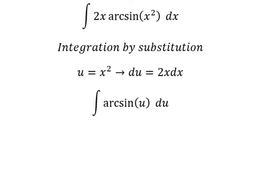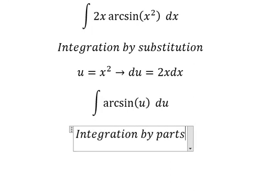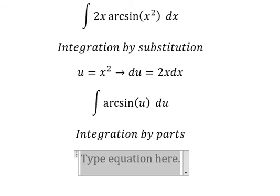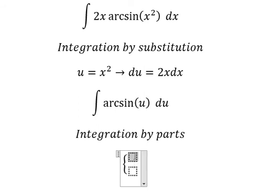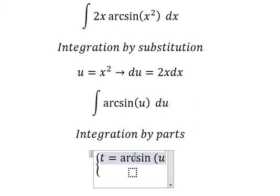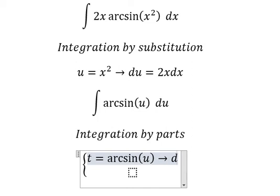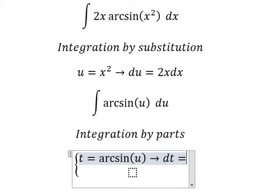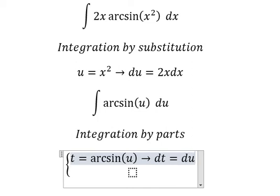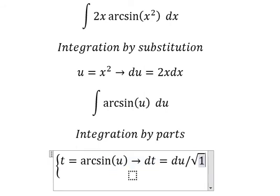Next we need to use integration by parts. So I will put t equal to arcsin of U. So if I do the first derivative for both sides, we have dt equal to dU over the square root of 1 minus U squared.